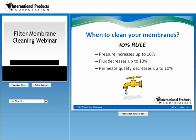So, we talked about the chemical mechanisms of fouling and cleaning membranes. Now, when is the right time to clean? The 10% rule predominates. Basically, if the pressure increases up to 10%, or the flux decreases up to 10%, or the permeate quality decreases up to 10%, it's time to start the cleaning procedure. The pressure and the flux are probably the easiest to measure in real time. The permeate quality, on the other hand, may be slightly more difficult.